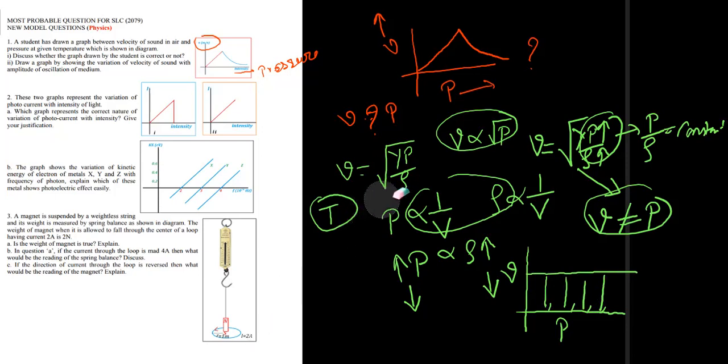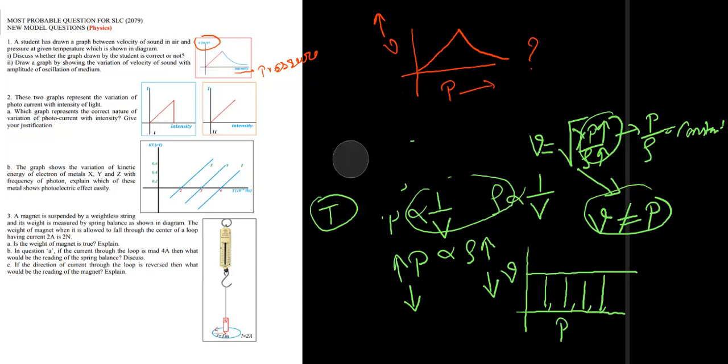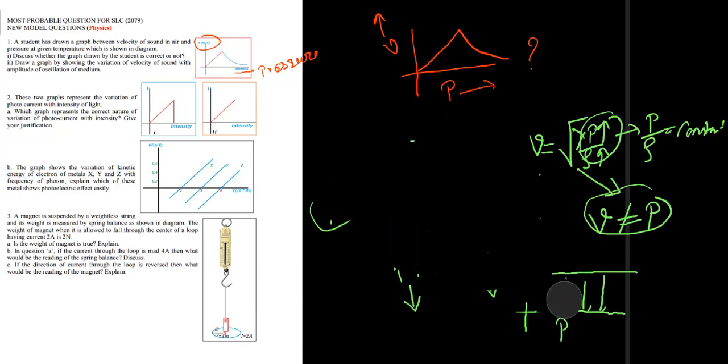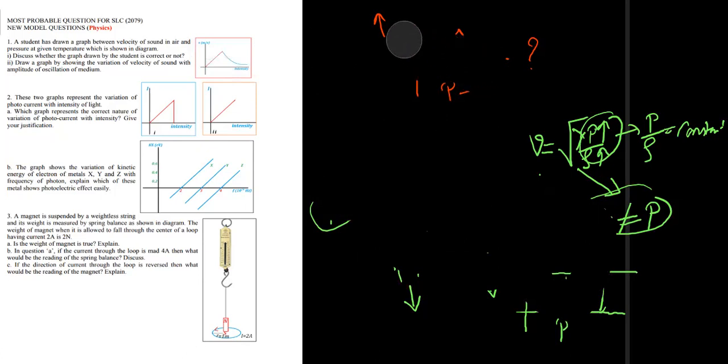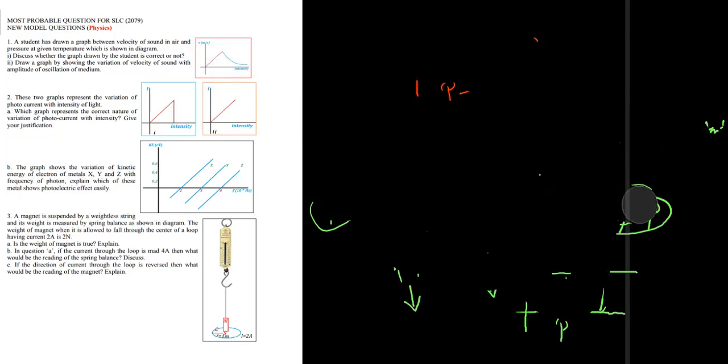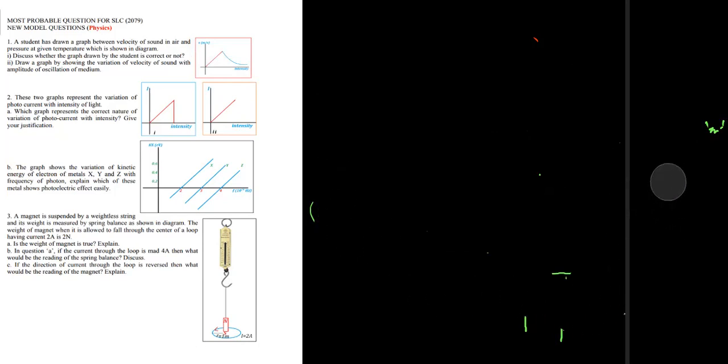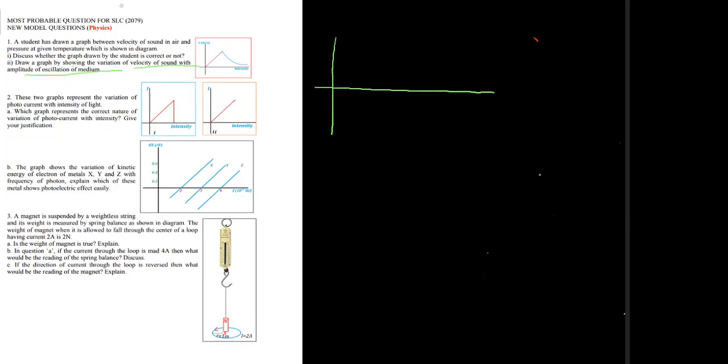Now for the second part: draw a graph showing the variation of velocity of sound with the amplitude of oscillation of the medium. This graph will help us see the variation for a sinusoidal wave — comparing the nature of different waves.